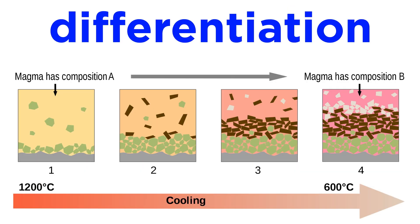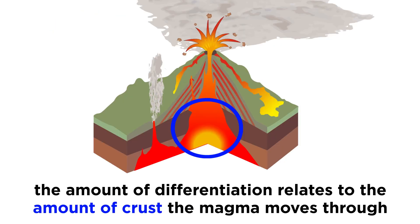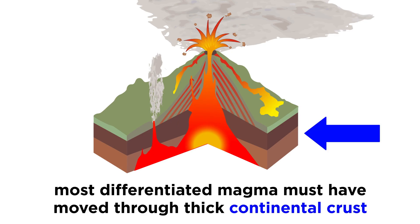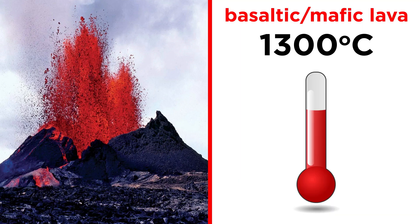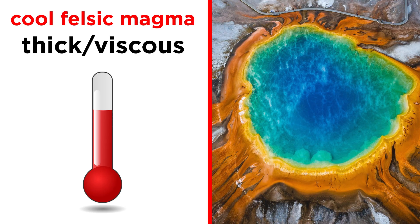These processes are together referred to as differentiation, which describes how a magma changes or becomes different as it cools. The amount of differentiation a magma undergoes is generally related to the amount of crust that it had to move through to make it near the surface. Therefore, the coolest and most differentiated magmas commonly erupt in areas where the crust is relatively thick, such as on continents. This is easy to see when comparing Hawaii and Yellowstone, as they are both hotspots. The volcanoes of Hawaii erupt basaltic or mafic lava at around 1300 degrees Celsius, whereas Yellowstone erupts cool felsic magma that is so thick and viscous that it clogs up the volcano, causing extremely explosive eruptions.